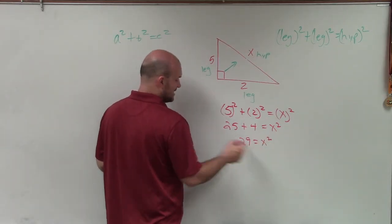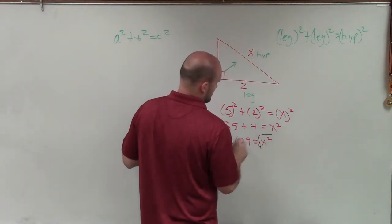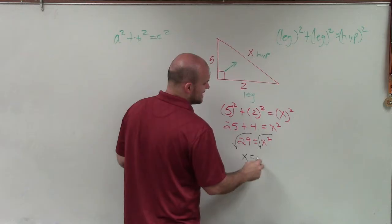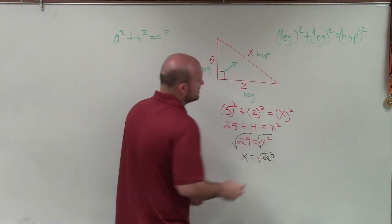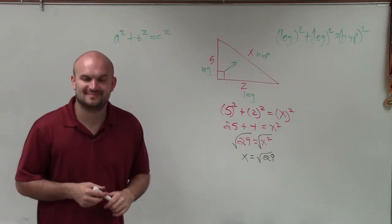And therefore, my final answer is x equals the square root of 29. That is a radical, but it cannot be simplified any further, so I'll just leave it as that length. Thanks.